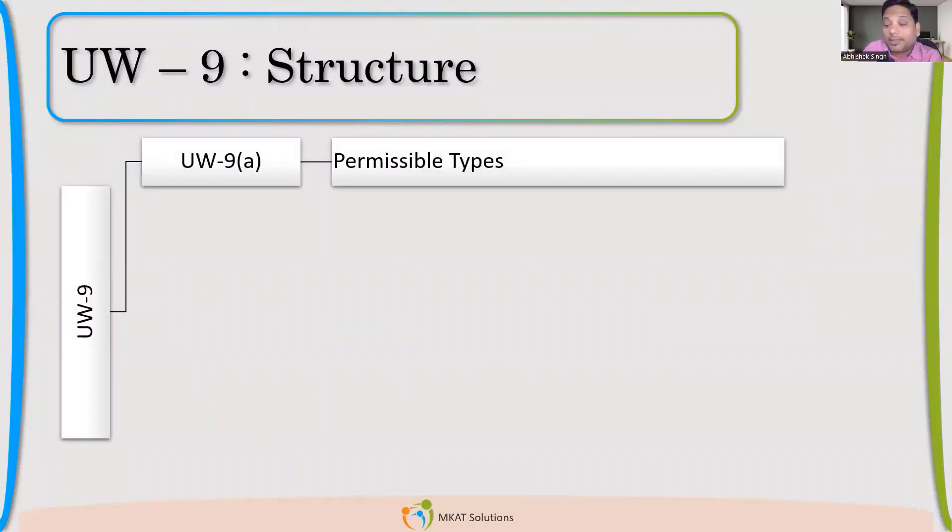Let us see the structure of UW-9, how it is structured, and then we'll talk about each clause in detail. UW-9A talks about what are the permissible types of welds. UW-9B talks about welding grooves.